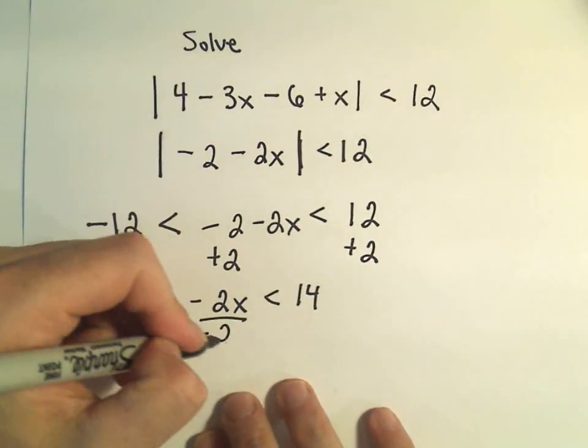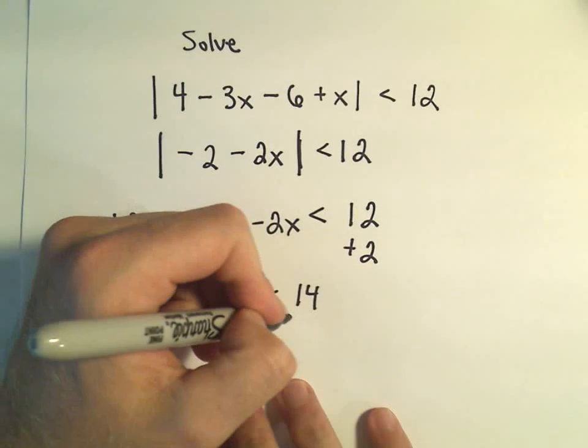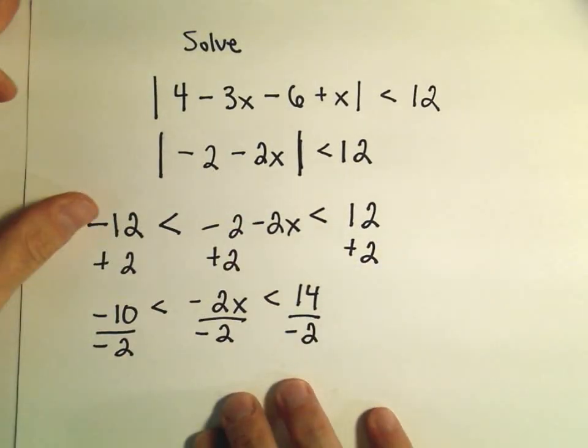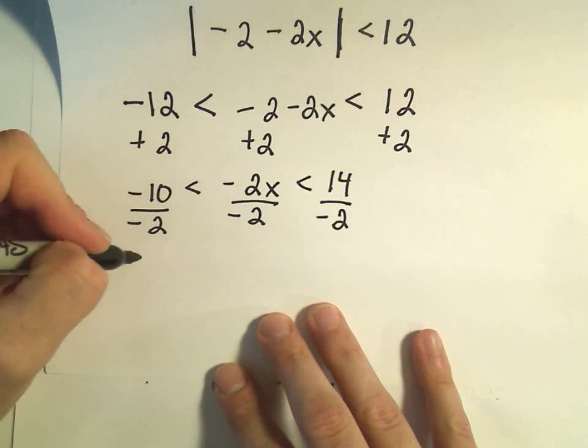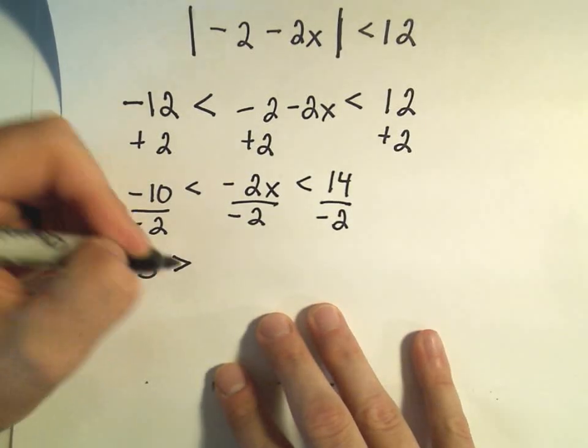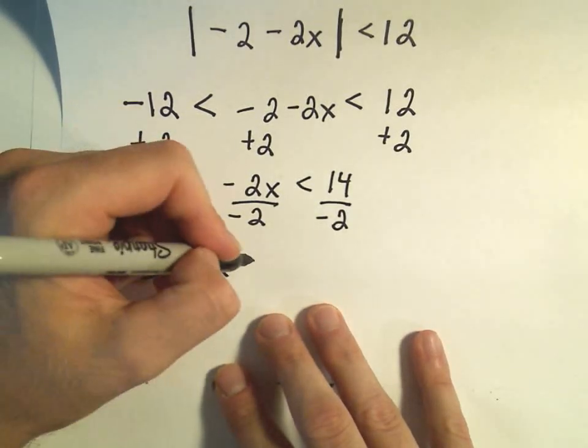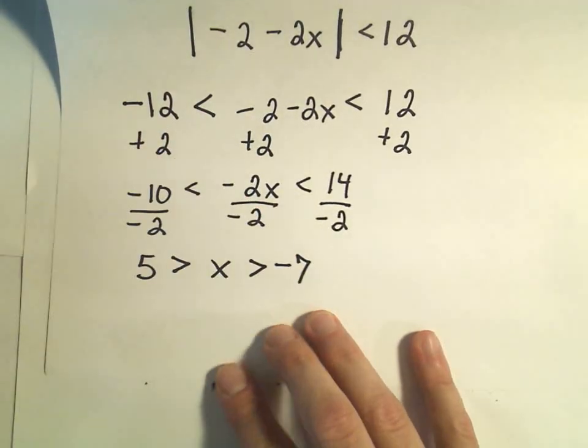And lastly, I would divide everything by negative 2. Remember, we have to be careful here because we're dividing by a negative, so our inequality will flip. So this will be positive 5 is greater than x, which is greater than negative 7.